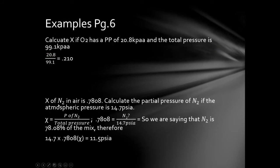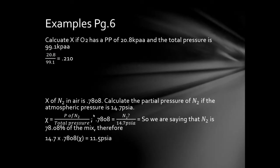Last example here: nitrogen in air is 0.7808, meaning air is 78% nitrogen. Calculate the partial pressure of nitrogen if the atmospheric pressure is 14.7 PSIA. We flip the formula: 14.7 times 0.7808 gives us 11.5 PSI. That's what nitrogen makes up in this particular mixture. So that's the easiest of the math so far.